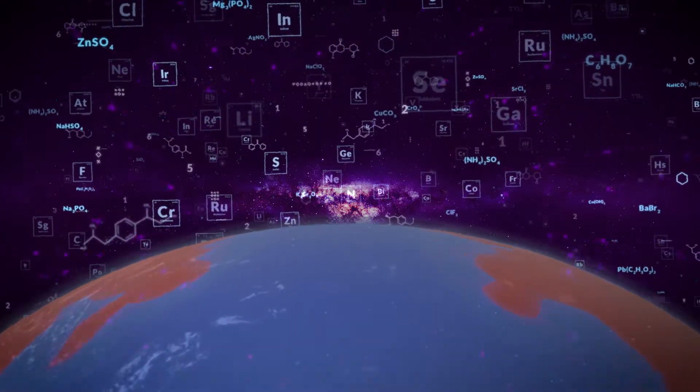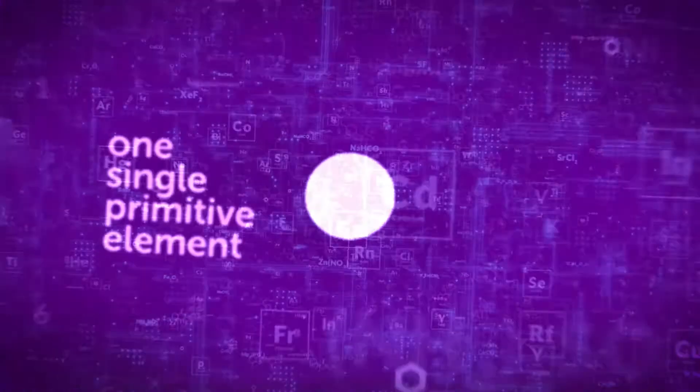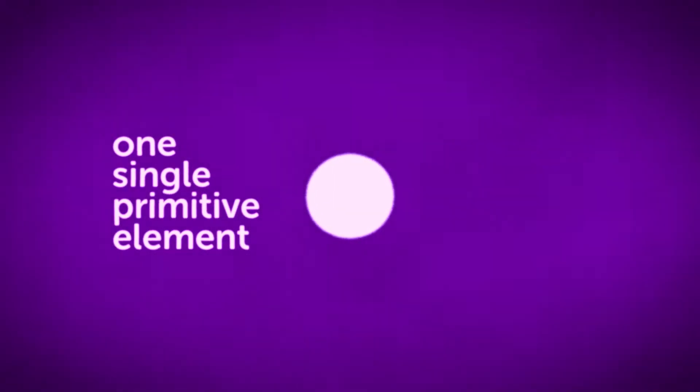So, does matter consist of one or many elements? One single primitive element. The bodies you regard as simple are not true elements, but rather transformations of the one primitive matter.